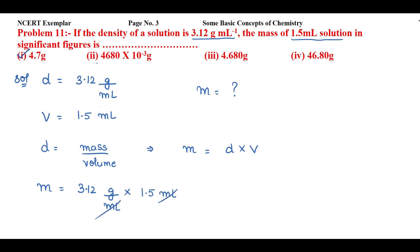I'll cancel mL with this mL. 3.12 into 1.5 will be 4.68 gram. I know that my answer should be according to the value that is having least significant figures. So volume is having least significant figures, so my answer should be like that.